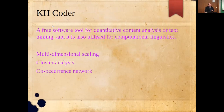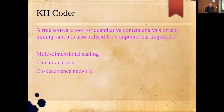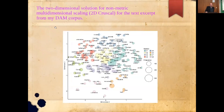The second tool is KH Coder, defined as a free software tool for quantitative content analysis or text mining, also utilized for computational linguistics. It involves many different possibilities like multi-dimensional scaling, cluster analysis, and co-occurrence network analysis. I implemented this tool on my corpus of digital museums — six digital museums of digital art were analyzed.